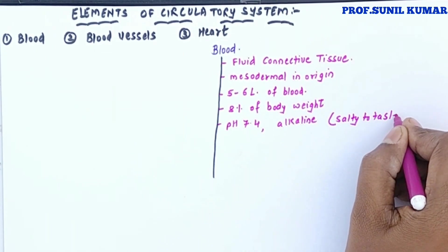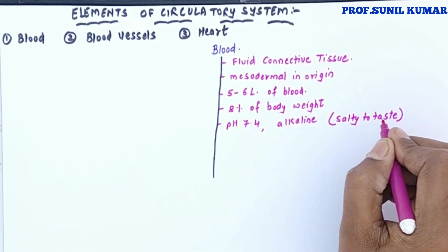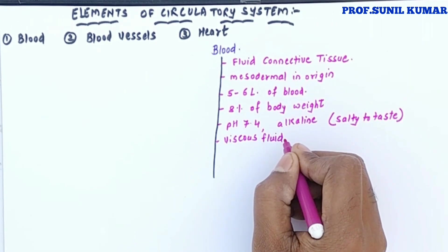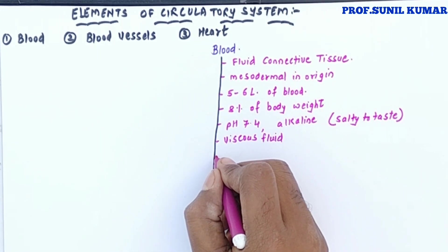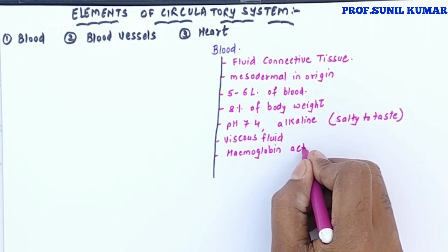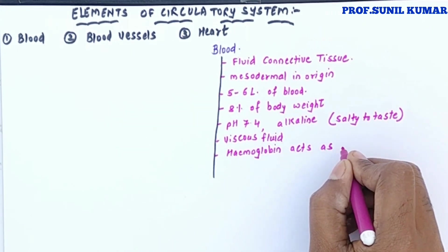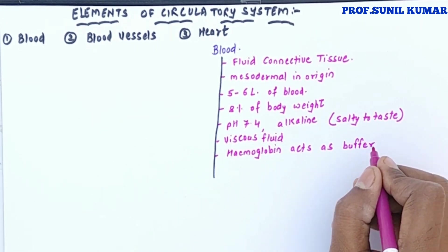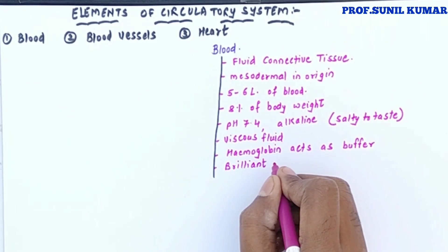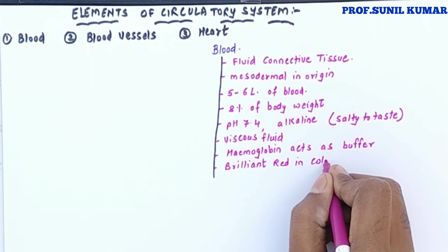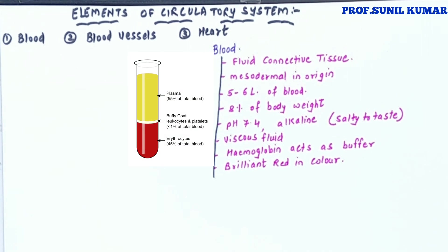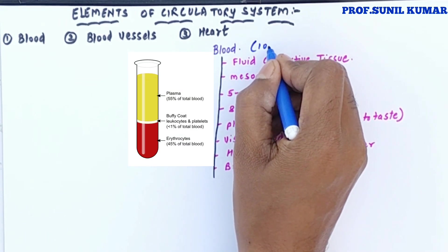Blood is salty to taste. When we talk about viscosity, blood is a heavy, viscous fluid. Blood contains hemoglobin, which is very important — it acts as a buffer, a substance that maintains the pH of the blood. The pH is maintained by hemoglobin. Blood is brilliant red in color.